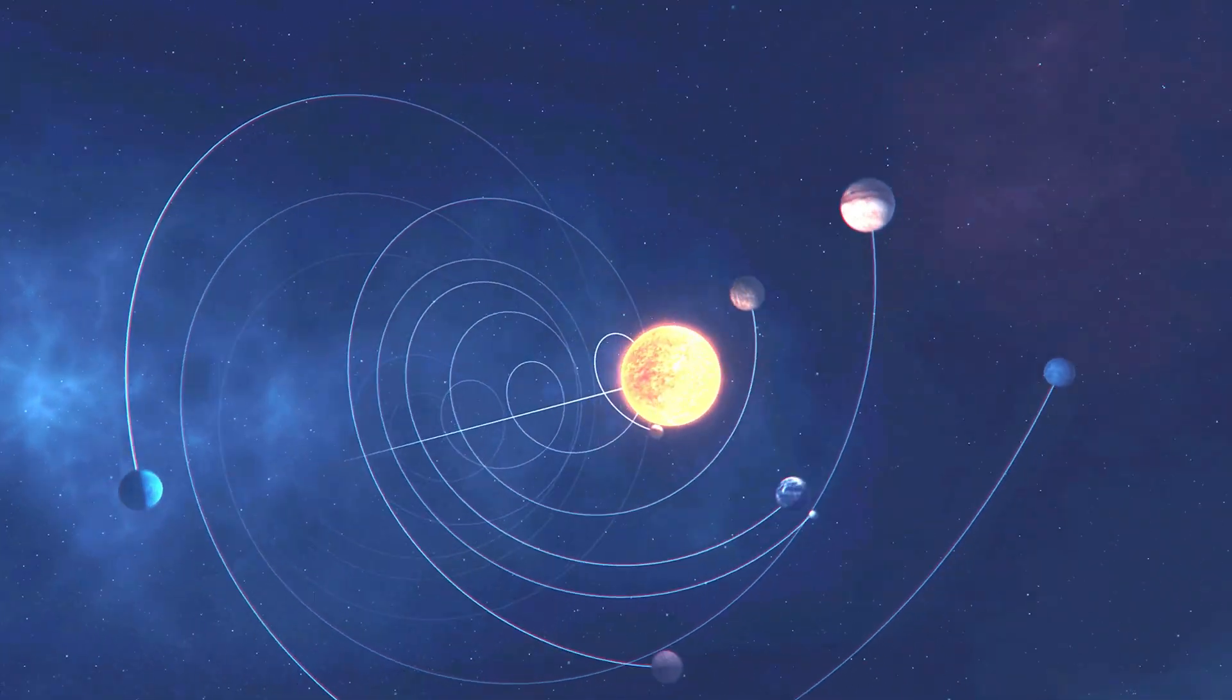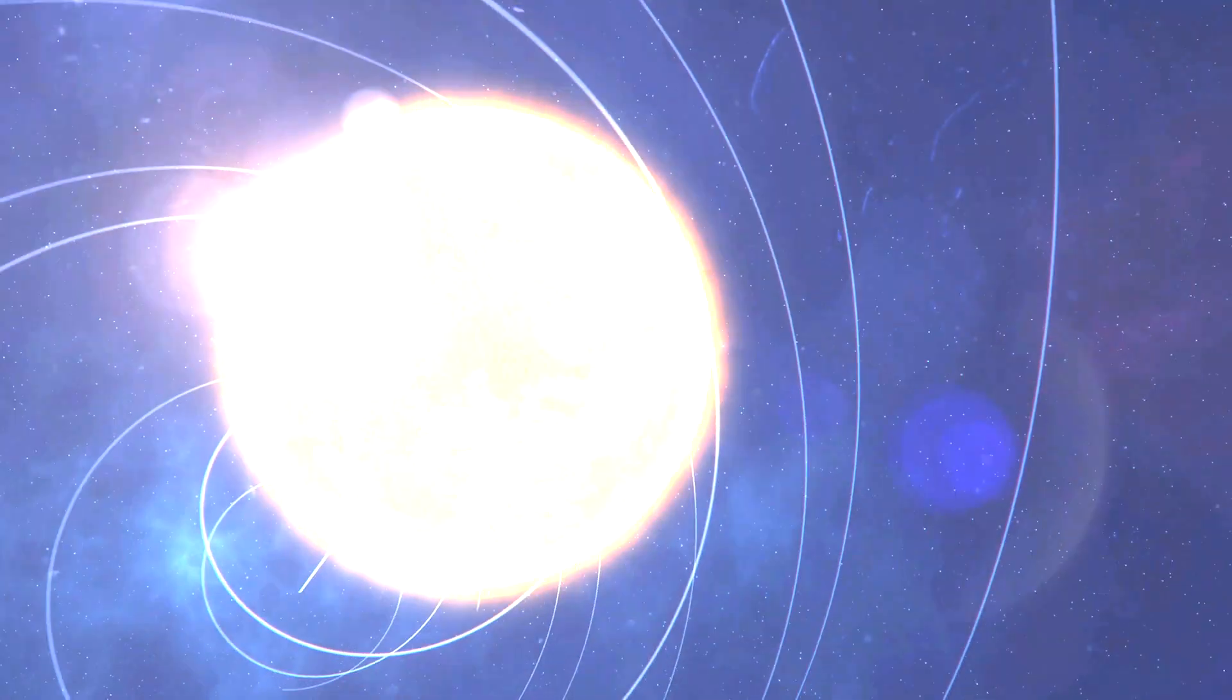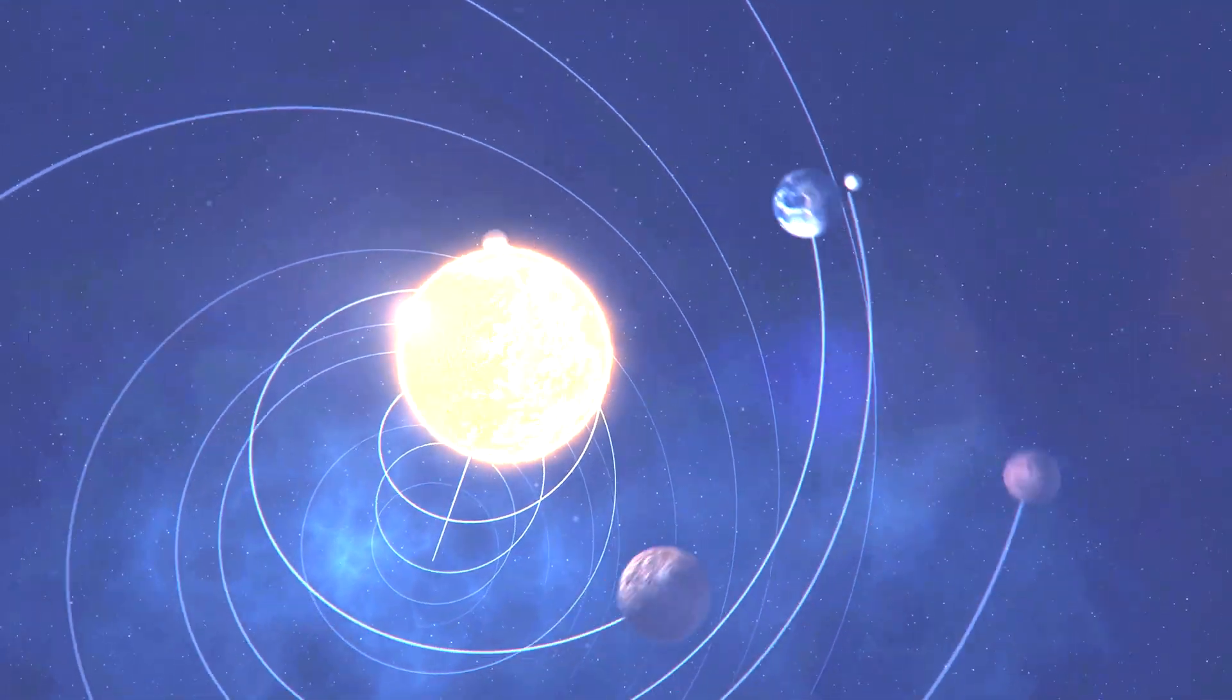From the side, everything changes. The planets don't circle. They spiral, twisting behind the speeding sun.